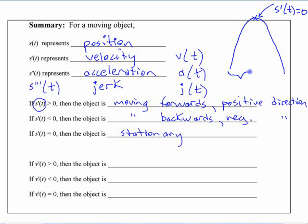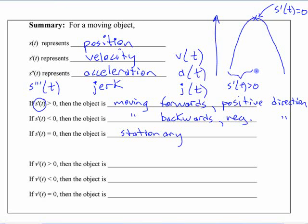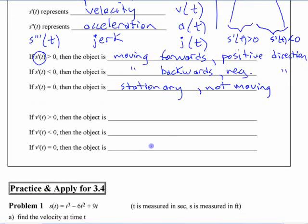For this first part here, up to that point, s prime of t is greater than zero, because if I'm calling this the positive direction. And then for this part right here, s prime of t is less than zero. I think you know all these things already. Maybe just putting them into mathematical terms.